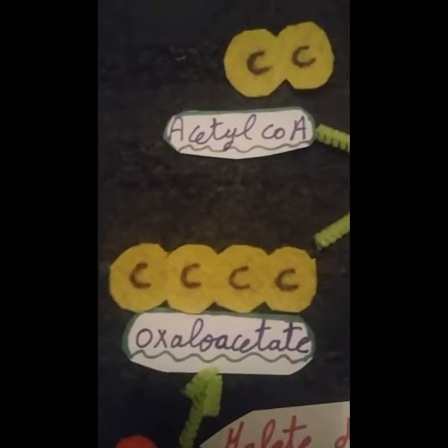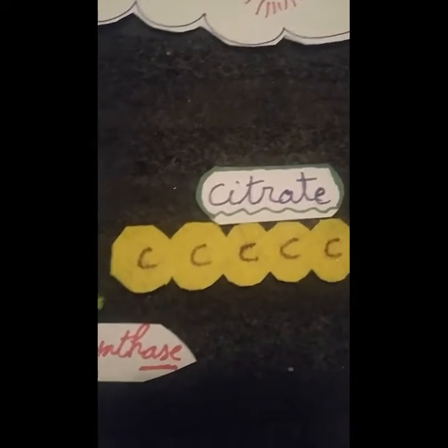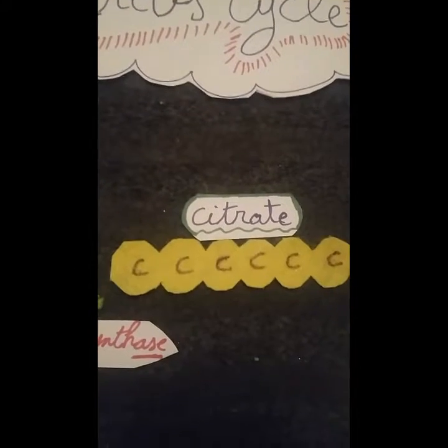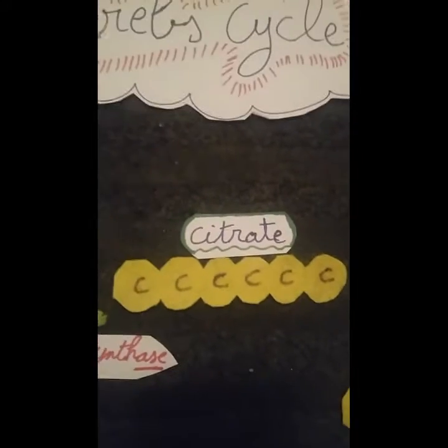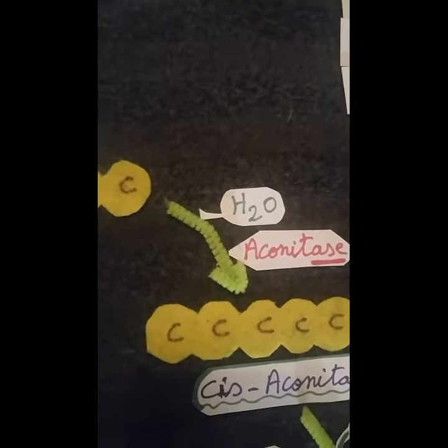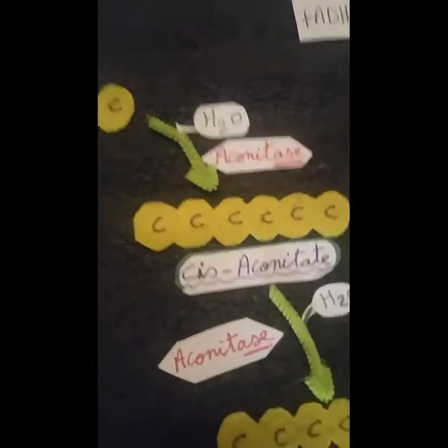Acetyl-CoA binds to oxaloacetate, which contains four carbon atoms. CoASH is released in this process, which occurs in the presence of citrate synthase enzyme. Citrate is formed — a six-carbon molecule — because the two carbons from acetyl-CoA combine with the four carbons of oxaloacetate. The Krebs cycle is also called the citric acid cycle for this reason. After forming citrate, one water molecule is removed, and with the action of aconitase enzyme, citrate is converted to cis-aconitate.